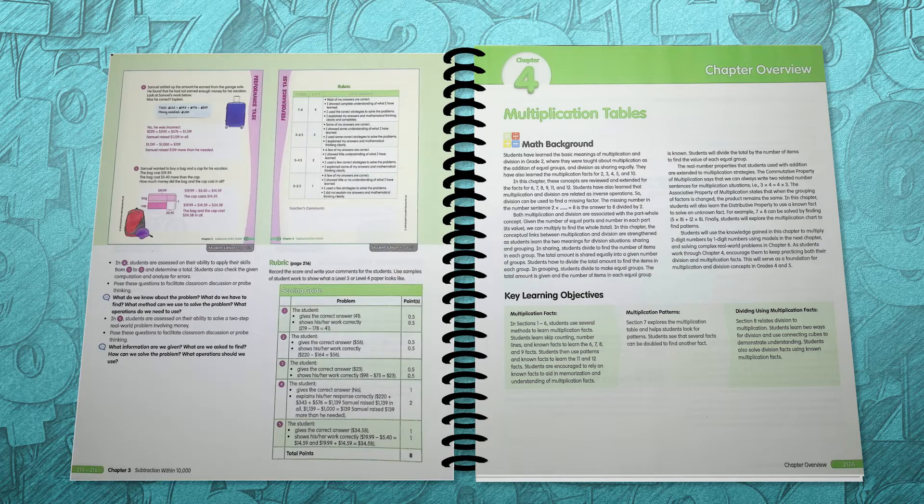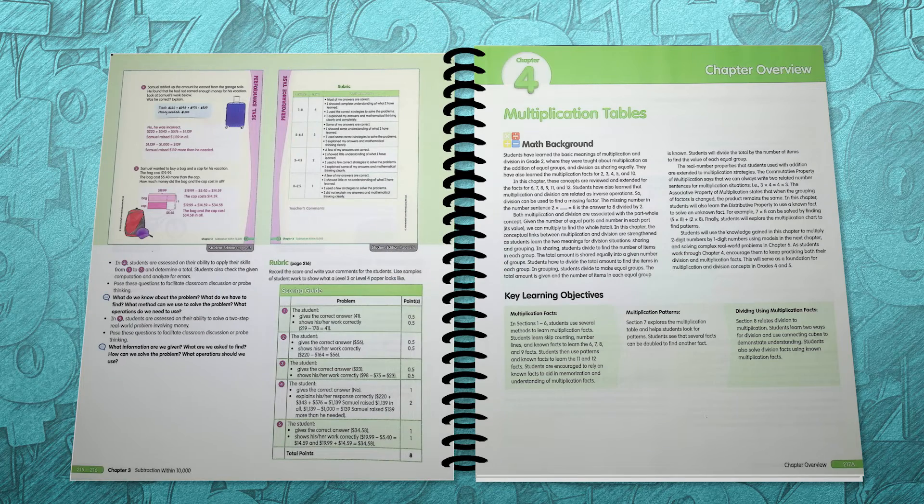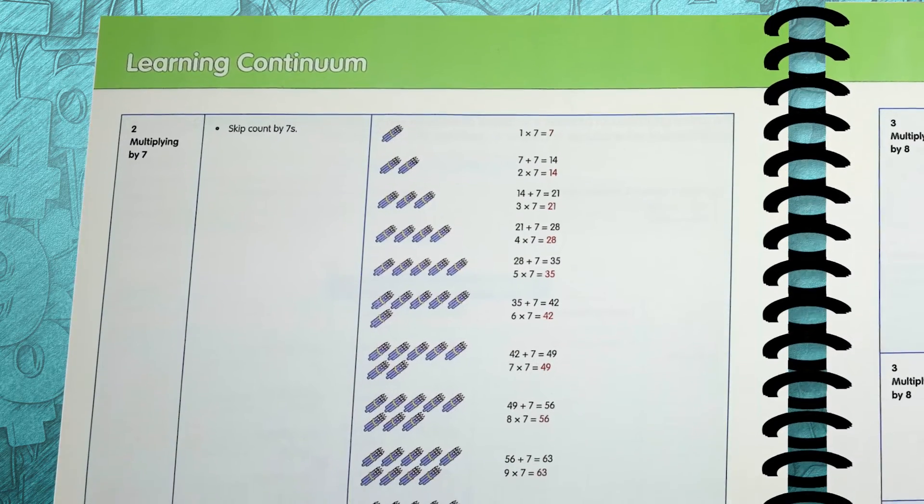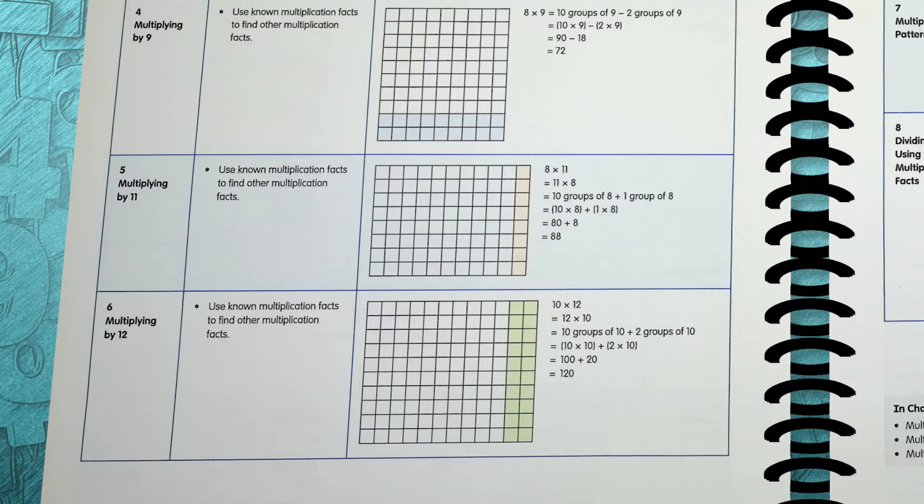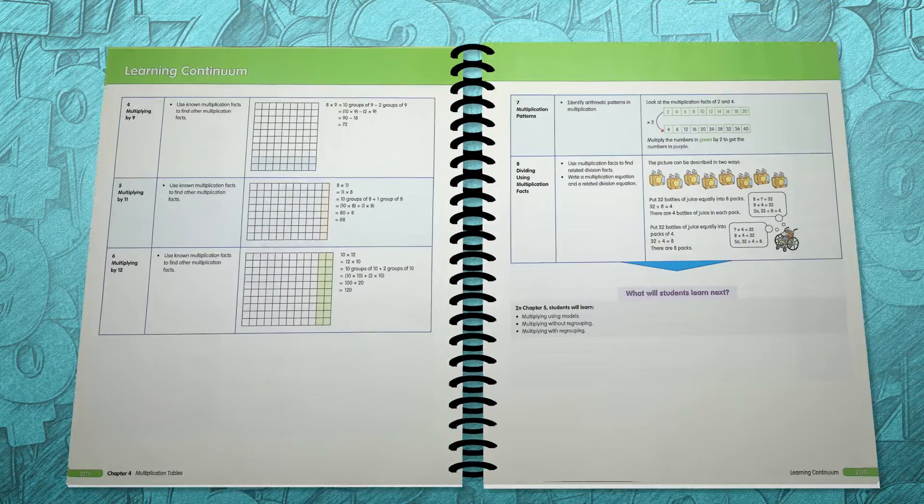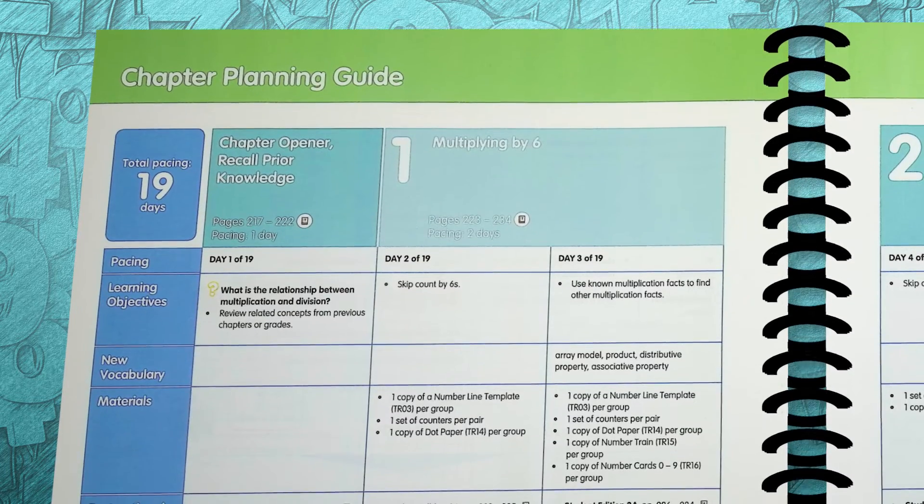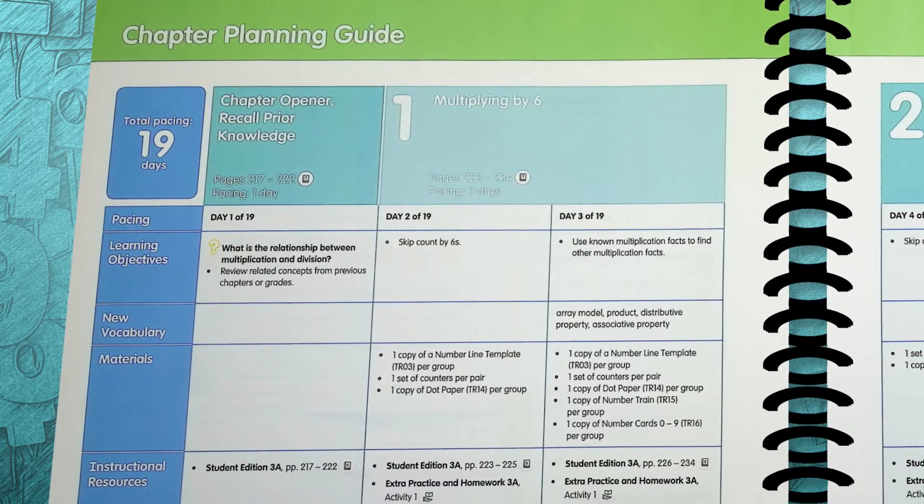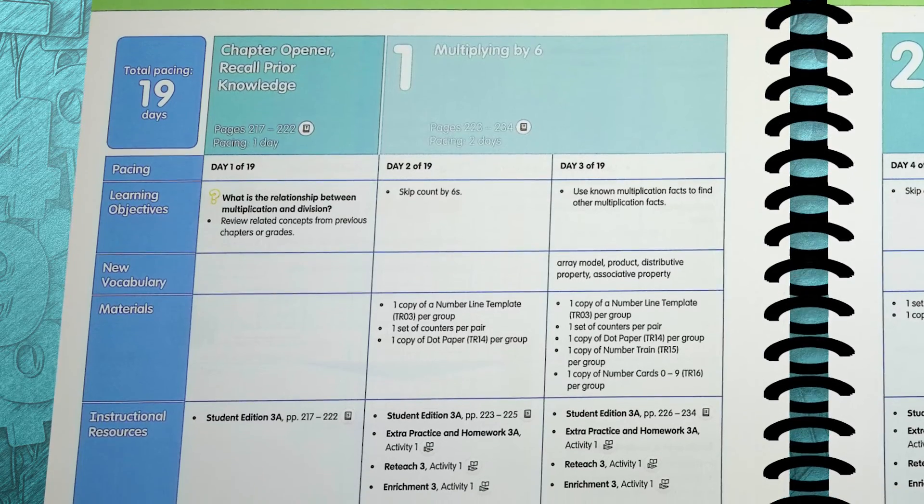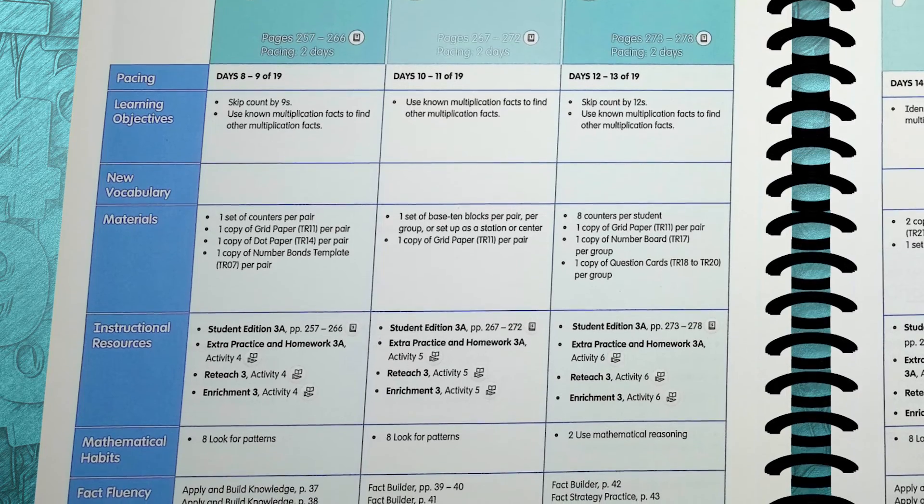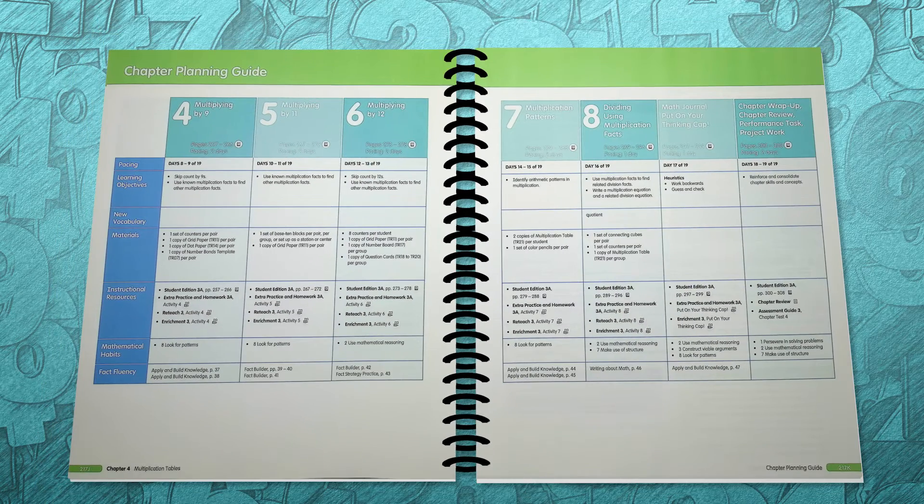The beginning of each chapter gives a math background and a learning continuum. This explains what students should have learned in previous grades, what they're learning in the present, and what they will learn next. The chapter planning guide is a very helpful component giving you the total number of expected days to complete each chapter and a pacing guide for each day. This is handy because it takes the guessing out of how to pace your day. It also includes the manipulatives needed or teacher resource sheets found in the back of the teacher guide as I mentioned earlier.